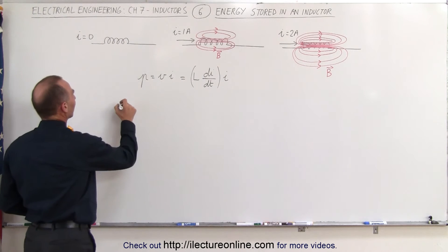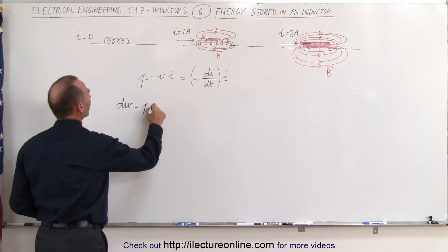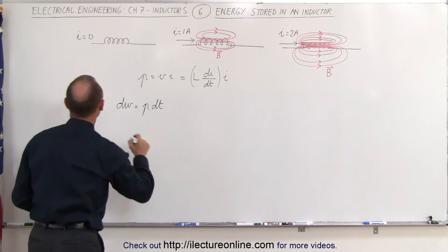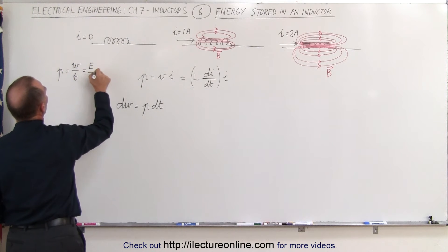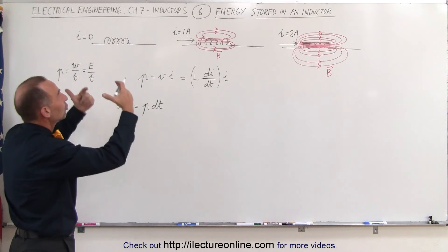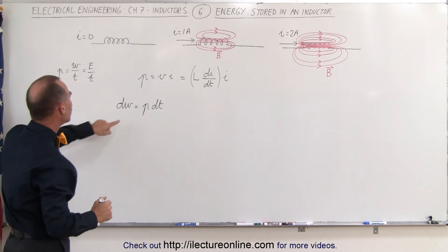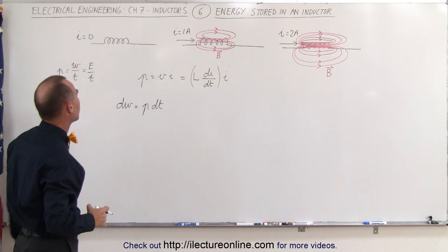We can write this as a small amount of work done, dW, is equal to the power times dt. Remember that the definition of power is equal to work over time or energy over time. Of course the amount of work you do is equal to the amount of energy you store in the inductor, so we can use the letter W for work or E for energy.